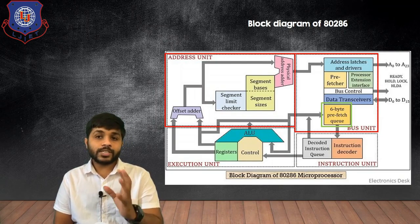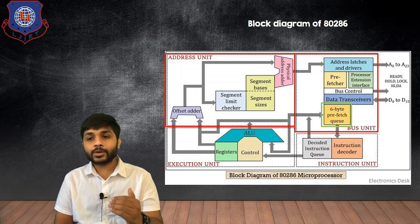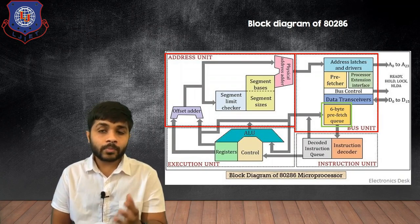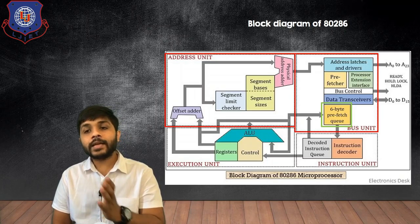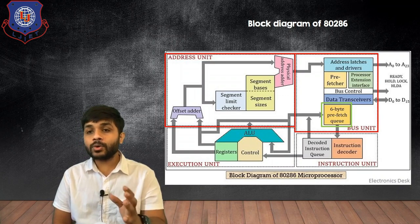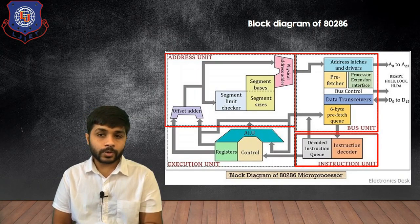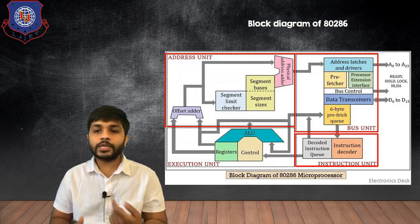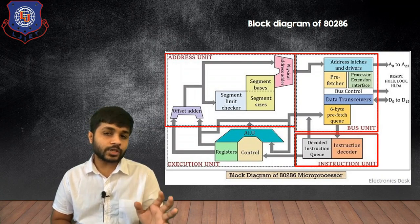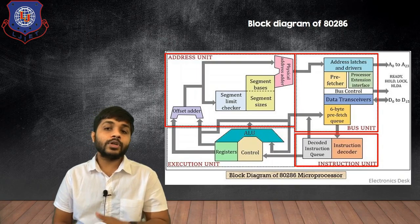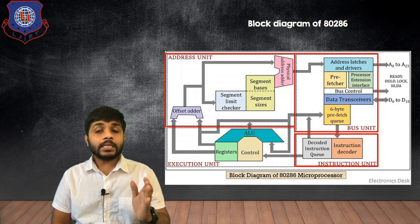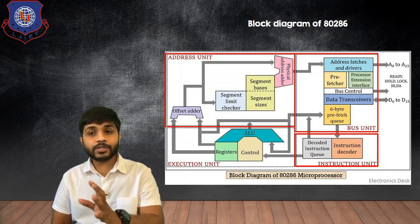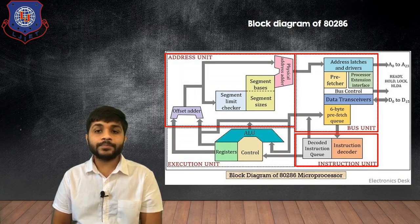In the 6-byte prefetch queue, 6 instructions can be prefetched. So while one instruction is in execution, the next 6 instructions will be stored in this block. The next part is the instruction unit. The instruction from the prefetch queue will be transferred to the instruction decoder, where the processor will decode the instruction and understand what that particular instruction is trying to say. After that it will be transferred to the decoded instruction queue. So in the 80286 there is a prefetch queue as well as a decoded instruction queue — two queues are present.